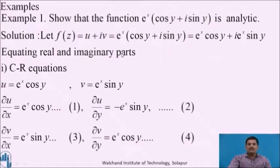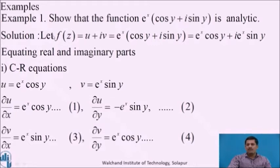Let us consider Example 1: show that the function e raised to x into (cos y + i sin y) is analytic. Solution: let us denote the given function by f(z), and f(z) has the general form u + iv, here given as e raised to x into (cos y + i sin y).